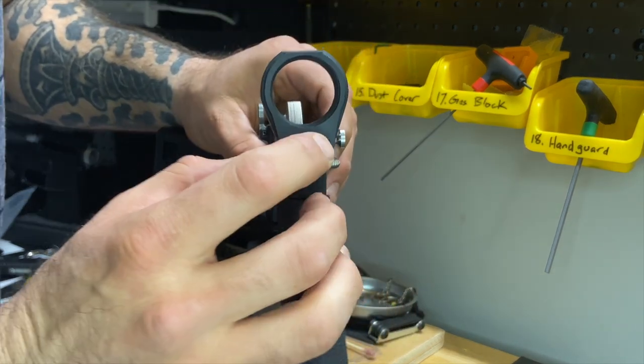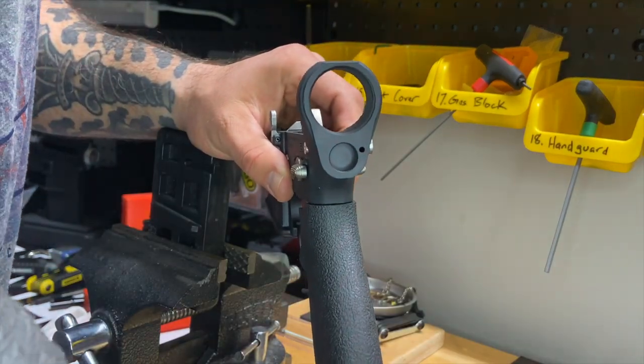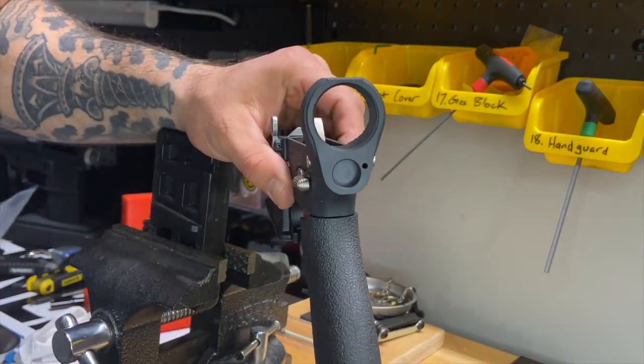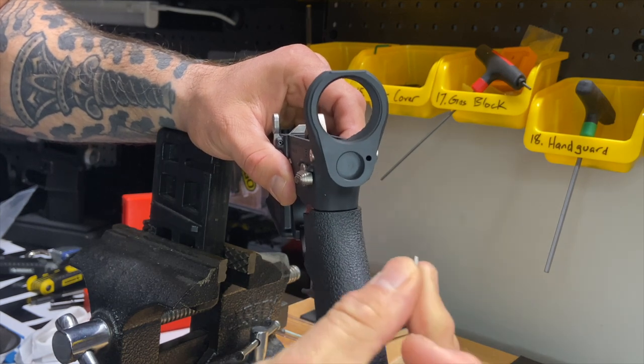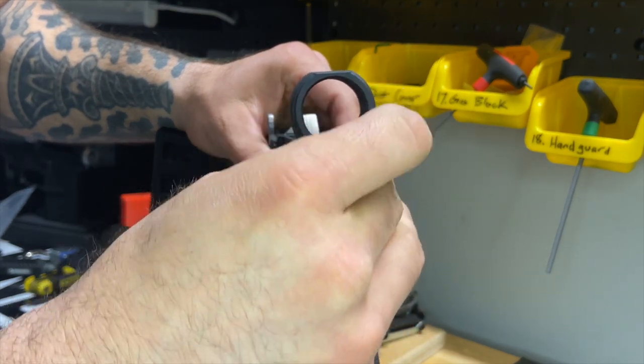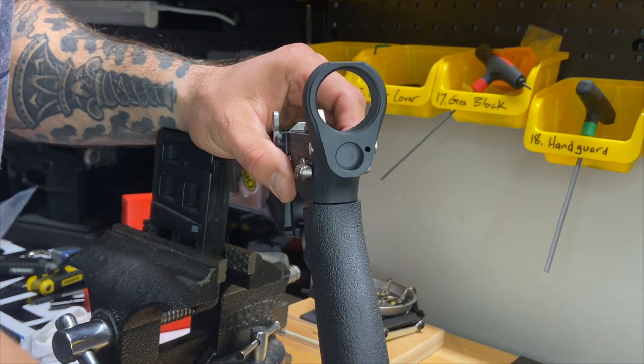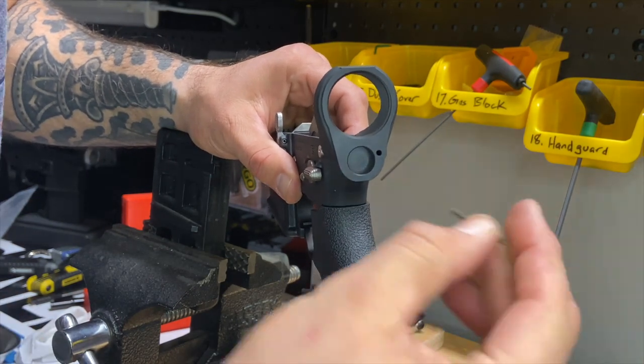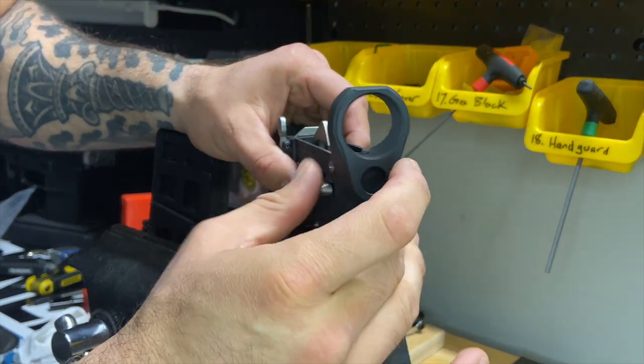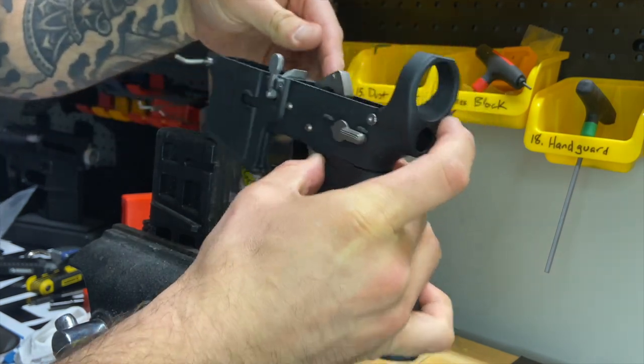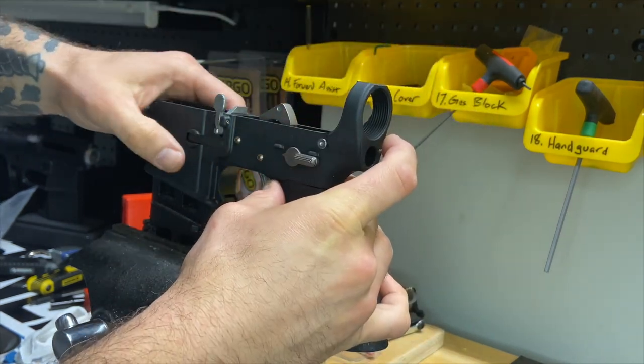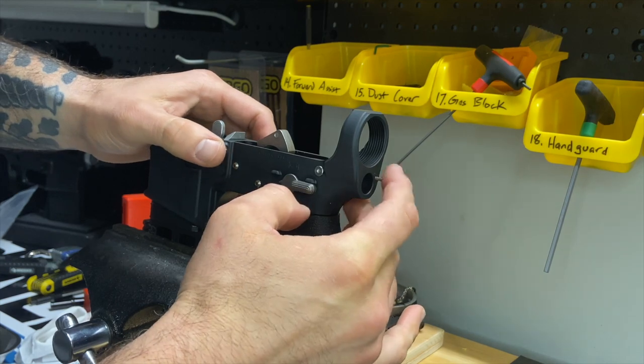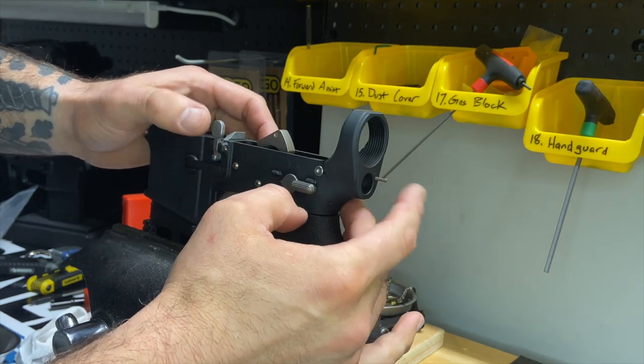See that hole there? We're going to take our takedown pin detent, slide it in that hole. Take our detent spring, slide it in there. Okay, it's important we do this first. Now let me get another angle.